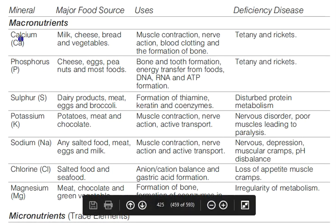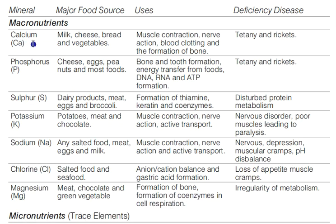First is calcium, a macronutrient required in large amounts. It is very important for bone formation as well as blood clotting — remember these two uses. Its sources include milk, cheese, and all dairy products.